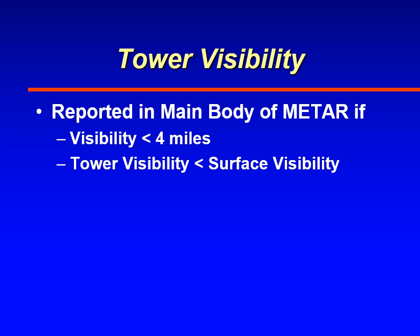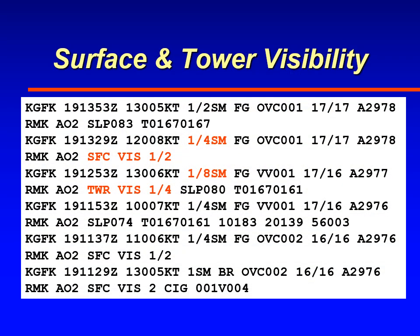Here are some METARs from Grand Forks on a day when the visibility was going up and down. At the 1253 Zulu observation, the visibility was one-eighth of a mile with fog and vertical visibility of 100 feet. Who made that observation? That's the prevailing visibility. If you look at the remarks section, you'll see the tower visibility is one-quarter mile. So the lower visibility — the one-eighth mile — was measured by either the ASOS or a human augmenting. The surface visibility is the prevailing visibility there.